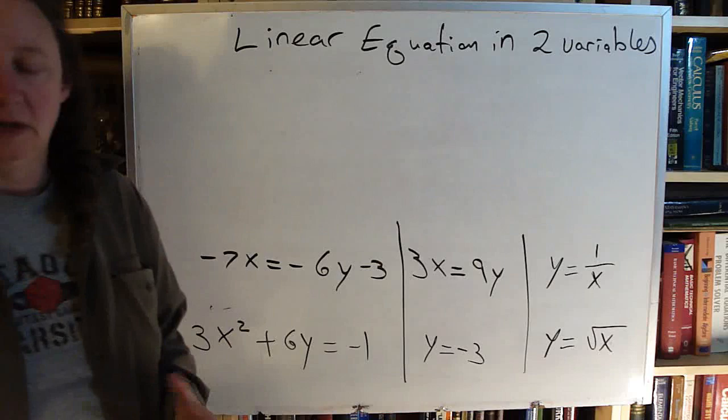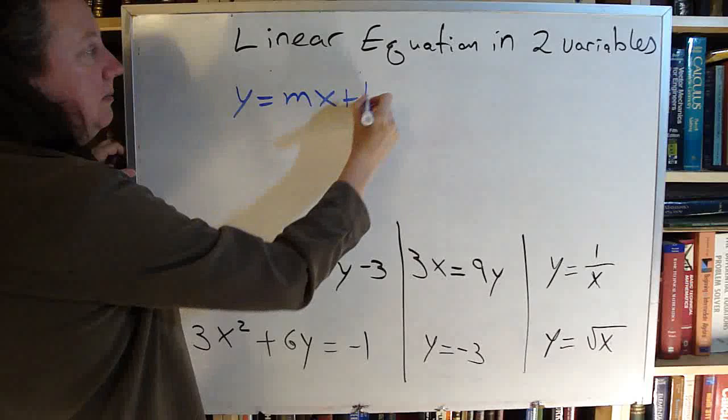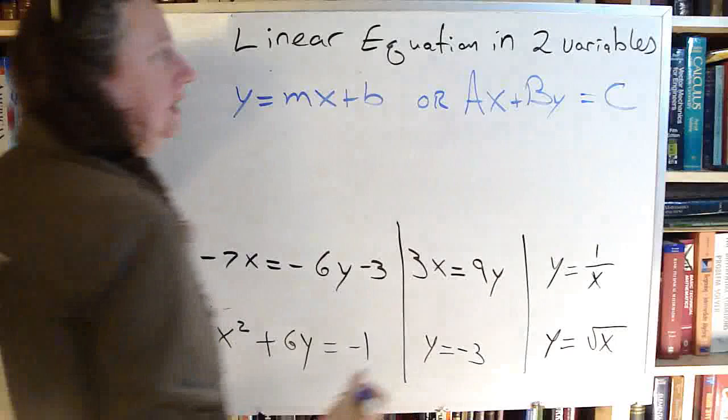Linear Equations in Two Variables. A linear equation with two variables is something that can be written like y equals mx plus b, or it could be written as Ax plus By equals c.